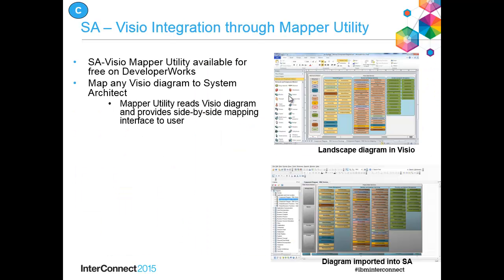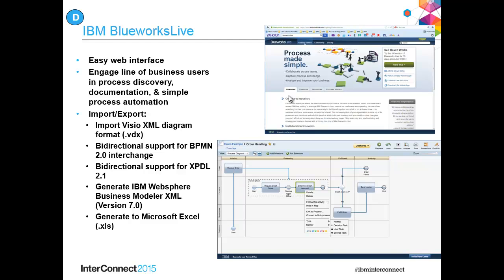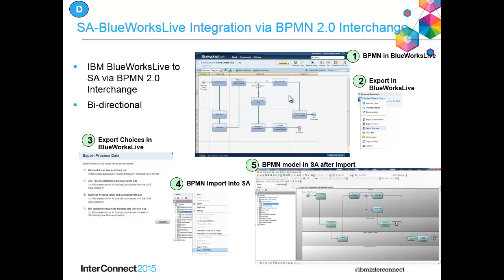There are many ways to exchange information — you can also merge information between encyclopedias. Visio integration: here's an example of a Visio landscape diagram imported into System Architect through the Visio Mapper utility, available at no charge on Developer Works. You map anything in Visio to something in System Architect, so customize the metamodel first. Here's BlueWorks — a process flow modeled in BlueWorks on the web, supporting bidirectional BPMN interchange. In the workshop you import a diagram built in BlueWorks, exported to BPMN in a zip file per the interchange spec, and import it into SA.